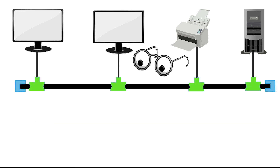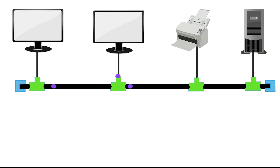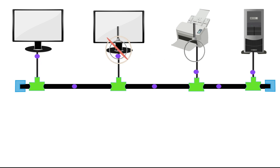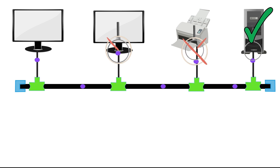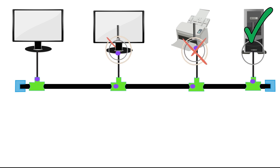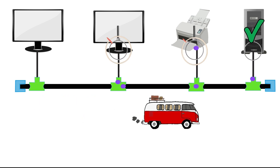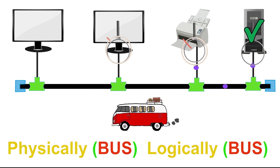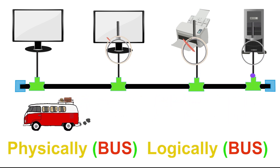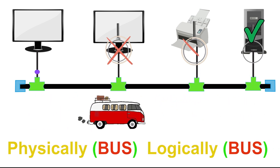It uses terminators to close both ends. Now let us see how signals travel on this topology. When a device sends signals, signals reach all devices. Each device checks the received signals. If incoming signals are for it, it processes them; if not, it discards them. This flow of signals creates a bus layout — it uses a bus for both physical and logical layouts.